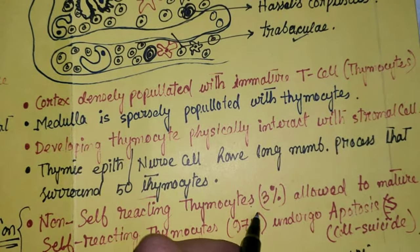We need to understand what non-self-reacting and self-reacting thymocytes are. Not all thymocytes that come from bone marrow undergo maturation inside the thymus. Approximately 97% of thymocytes undergo apoptosis — programmed cell death — because maximum thymocytes are self-reacting, meaning they react against our own self-antigens.